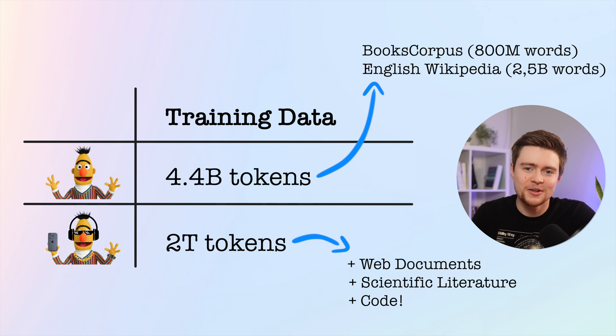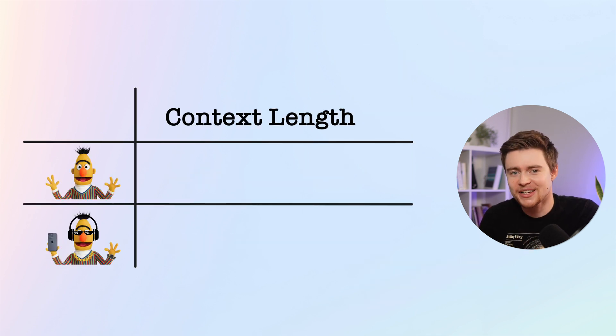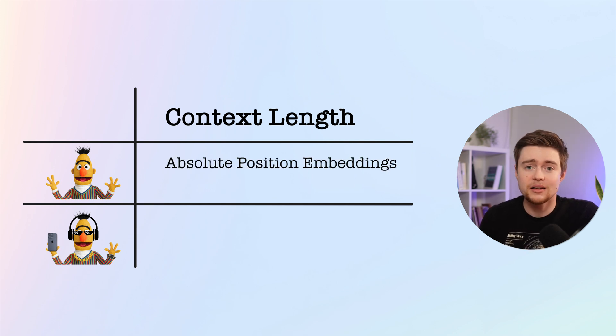The next spec update is in context length. Transformer models, whether encoders or decoders, need some mechanism to specify the position of tokens in their input. Without this mechanism, they would treat all text as a random jumble of tokens with no structure or order. BERT handles this with something called absolute position embeddings. While this approach works, it hard-codes the maximum sequence length during training, and BERT cannot process more than 512 tokens as a result.